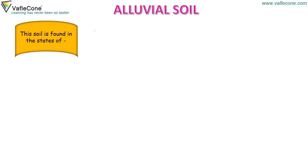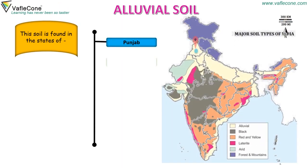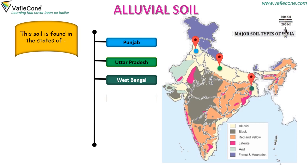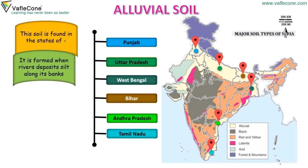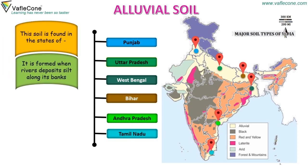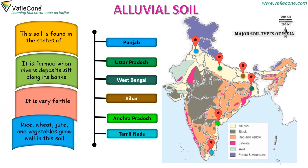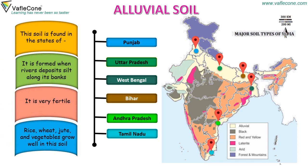Alluvial soil is found in the states of Punjab, Uttar Pradesh, West Bengal, Bihar, Andhra Pradesh and Tamil Nadu. It is formed when rivers deposit silt along their banks. It is very fertile. Rice, wheat, jute and vegetables grow well in this soil.